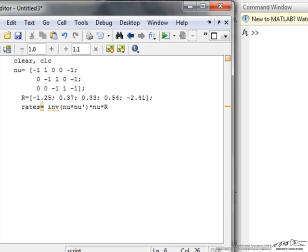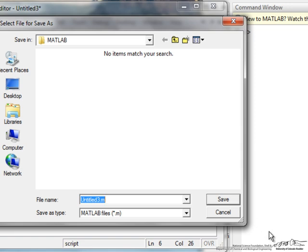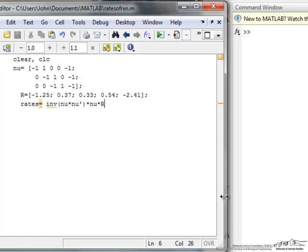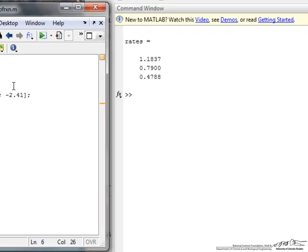So I am going to do a couple of things, first I want to save this, so I do save as, and so I am going to call it rates of reaction with no spaces, now I can save it, I go to debug and say run this program.